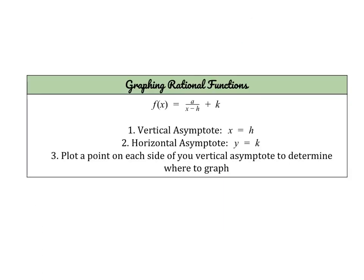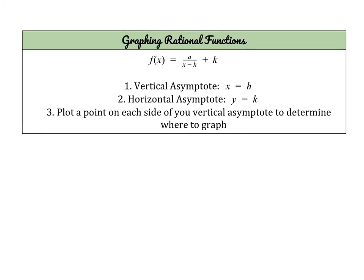Now that we know what the parent function looks like, we can graph transformed versions. Today we're going to work with shifts left, right, up, or down, some vertical stretches, and reflections. Here's the standard form: f of x equals a over x minus h plus k. These letters a, h, and k are transformations we've worked with earlier this year and follow the same rules.